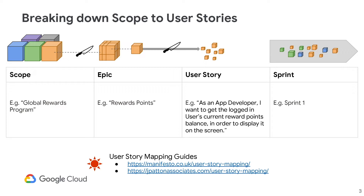In our global rewards program API set, we might have an API product called Rewards Points. This, however, is not enough detail for development. Usually at this time, the product owner will have written at least a few sentences or bullets at the epic level to define it. However, in order to be buildable, we need to get into smaller requirements that can be easily chunked up and developed in a sprint.